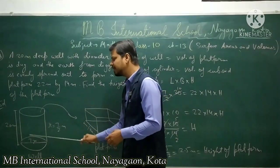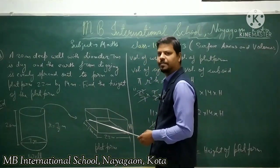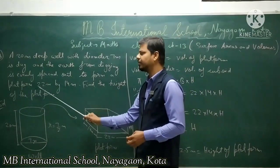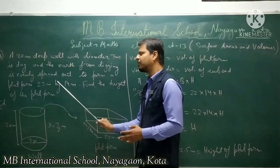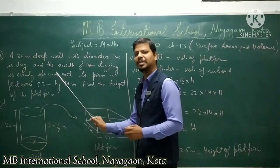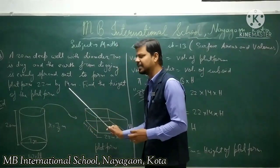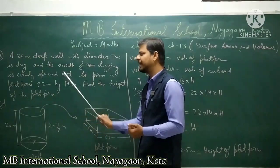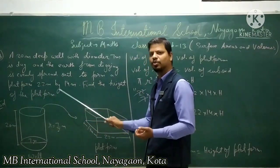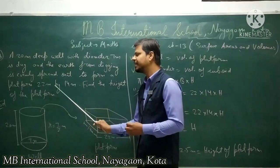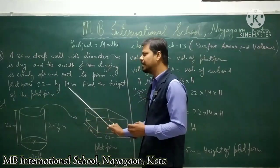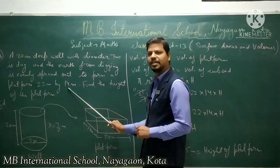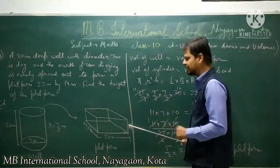The earth from the well is used to form the platform. The platform has length 22 meter and breadth 14 meter. We have to find the height H of that platform.